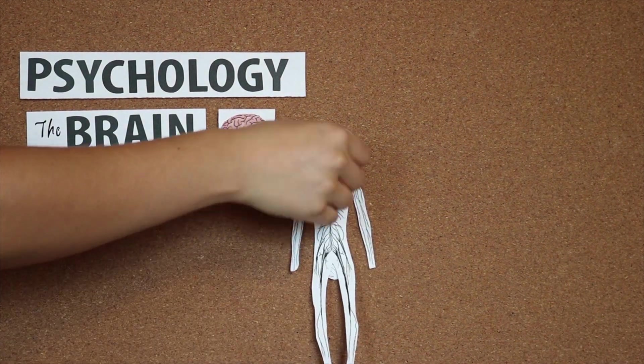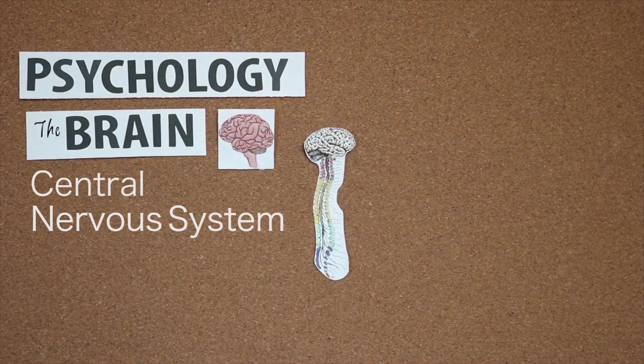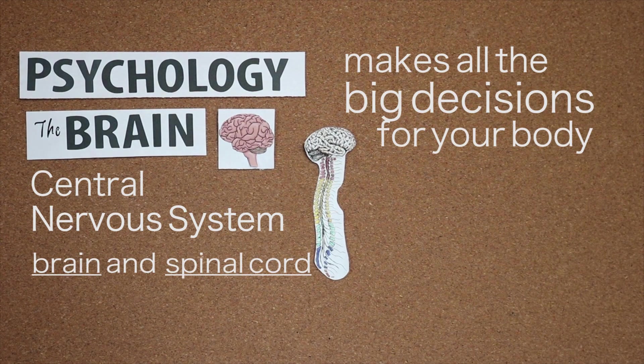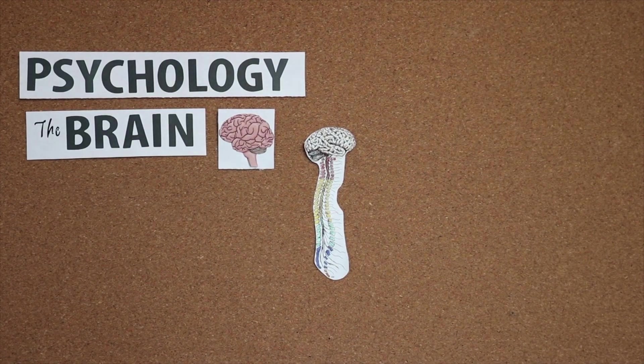The brain is a part of the nervous system, or more specifically, the central nervous system. The CNS is comprised of the brain and the spinal cord and it makes all the big decisions for your body. But what those big decisions are and how it makes them is complicated.